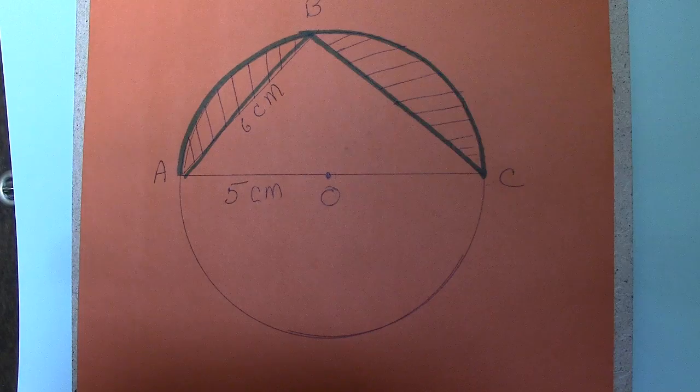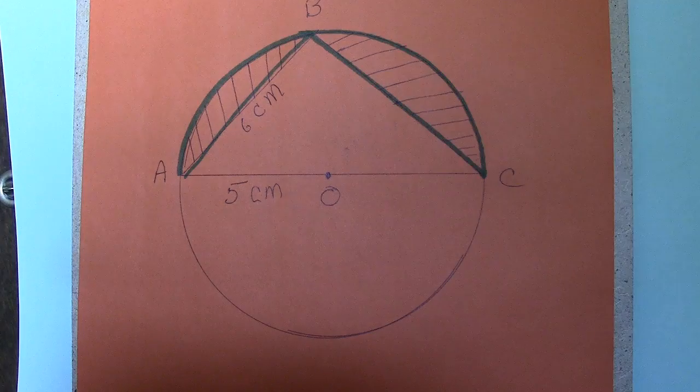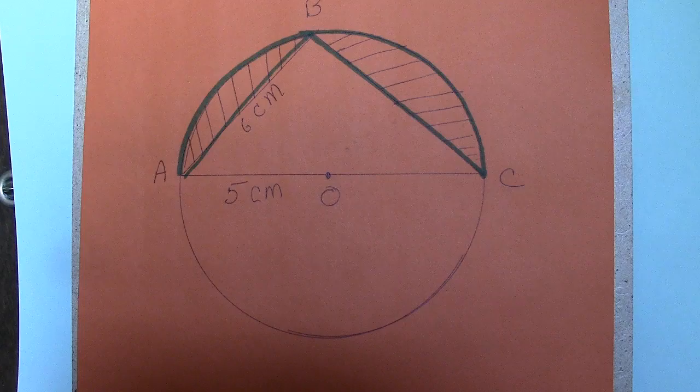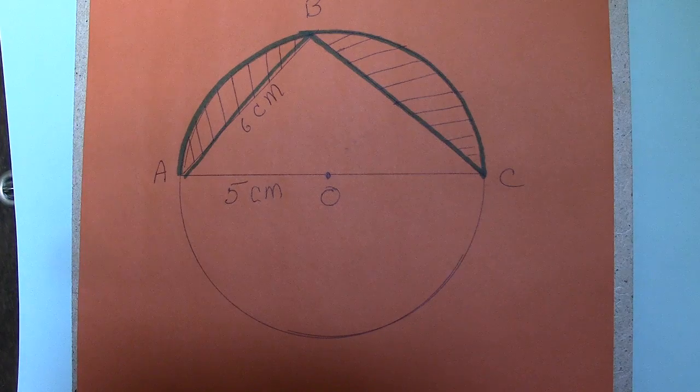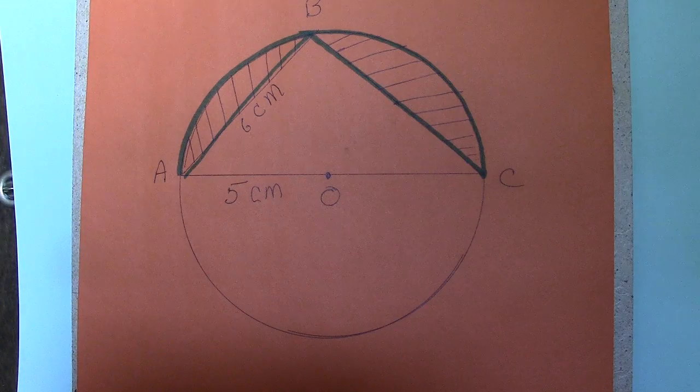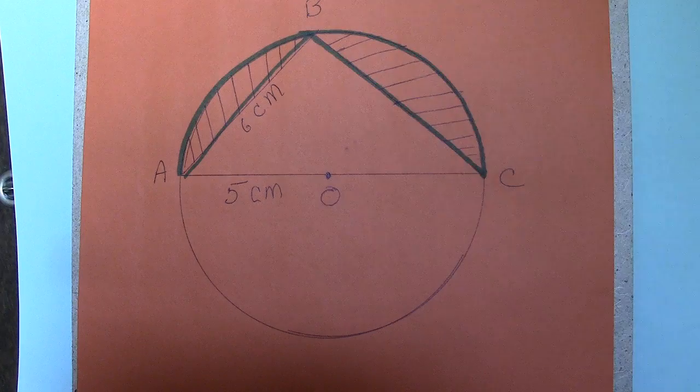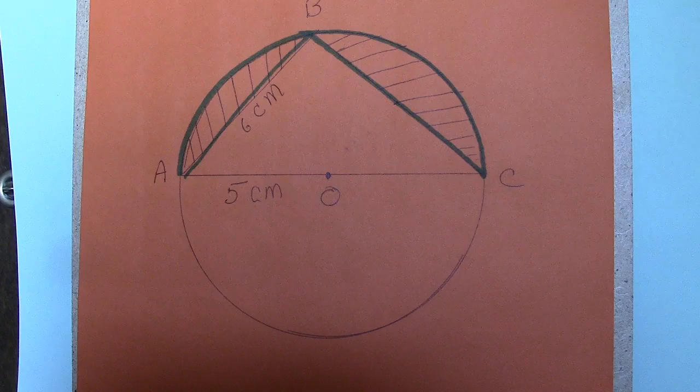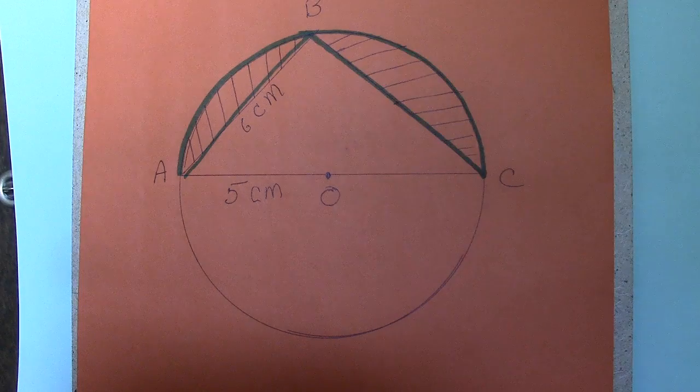So the side BC has to be 8 cm. Because then the square on BC would be 8 times 8, is 64. The square on the side AB is 6 times 6, 36. And 36 plus 64 equals 100, which is required by the Pythagorean theorem.